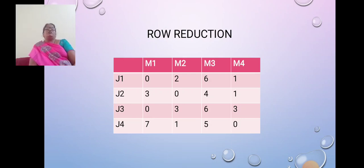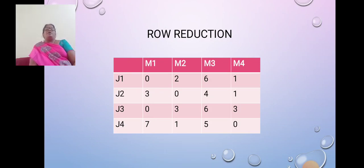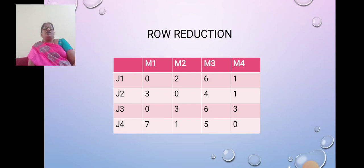Now we move to column reduction. The columns are M1, M2, M3, M4. In M1, there is a 0 — 0 is the minimum value in the first column, so subtracting gives the same result. In M2 also we have 0, so the same result appears. In M3, the minimum value is 4; we subtract 4 from the column values: 6 minus 4 is 2, 4 minus 4 is 0, 6 minus 4 is 2, 5 minus 4 is 1. In M4, there is a 0, so the same result appears.